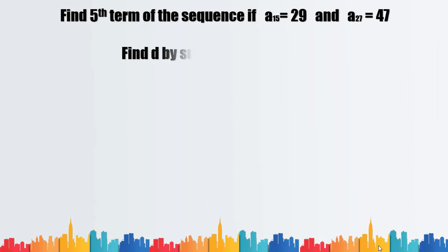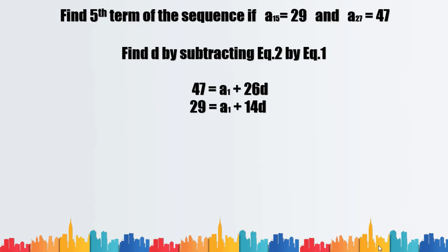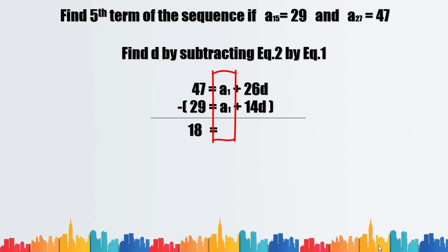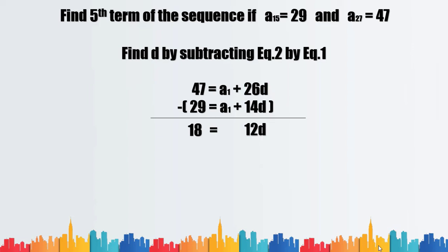We find d by subtracting equation 1 from equation 2. 47 minus 29 equals 18; a sub one minus a sub one equals 0; and 26d minus 14d equals 12d. To isolate d, we divide both sides by 12, giving us d equals 3 halves (3/2).